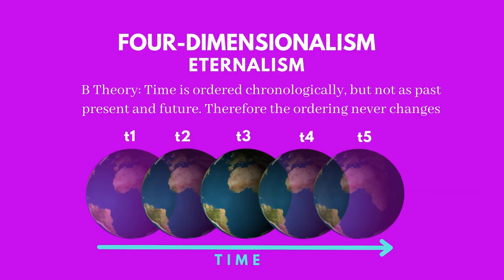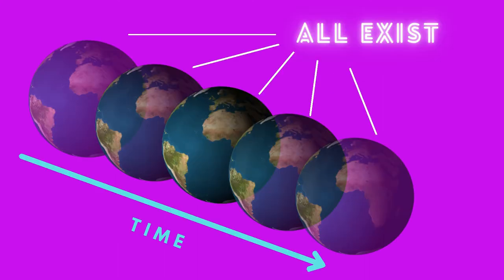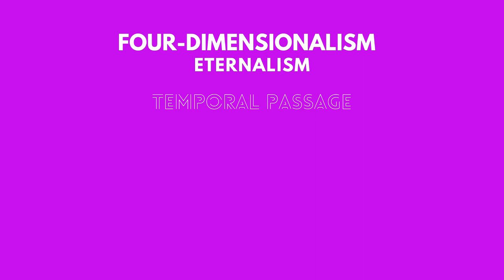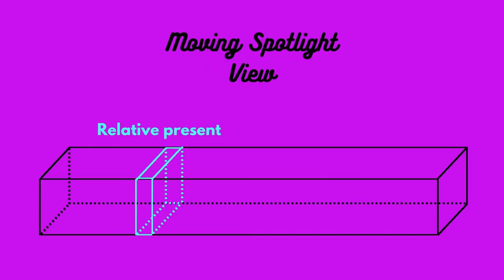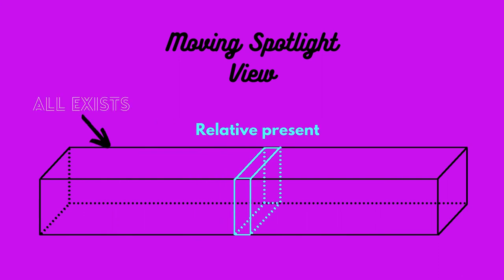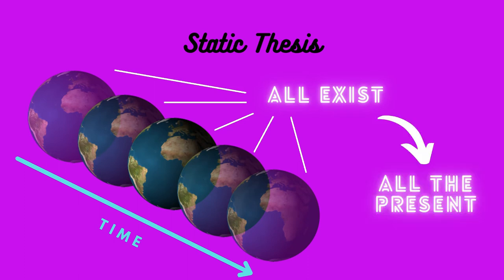So, four-dimensionalism is a B-theory. It believes that time has a chronological order — T2 is later than T1, and earlier than T3. But it does not believe in the idea of an absolute present. The present is not special compared to the past or the future, because they all exist. The present is just another way of saying where we are along the time dimension. Four-dimensionalist opinions about temporal passage vary somewhat. Some adopt the static thesis, and others believe in the moving spotlight view. The moving spotlight view is the most intuitive — like three-dimensionalism, it says that what we experience is the present, and this present moves along the time dimension. But the past, present, and future all continue to exist as we leave them behind and before we reach them. The static thesis is more controversial. It says that the present moment never changes, because what exists does not change. However, this can be seen as looking at four-dimensionalism with a three-dimensionalist understanding of the present.